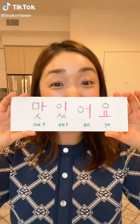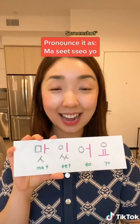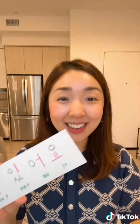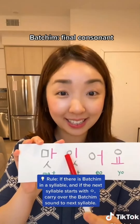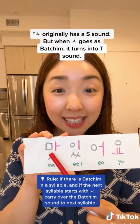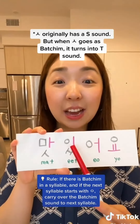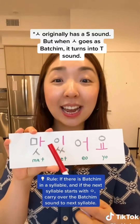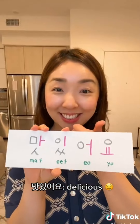Try pronouncing this word. Did you say it like 맛잇어요? It's actually pronounced as 맛있어요. The rule here is: if there is a 받침 like this and the next syllable has a silent consonant, you carry over the 받침 sound to the next syllable. This S syllable will be pronounced there. Double S will also carry over to the next syllable. And 맛있어요 means delicious.